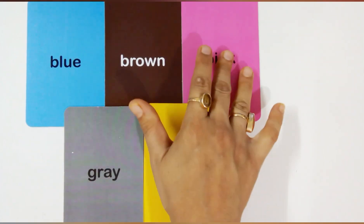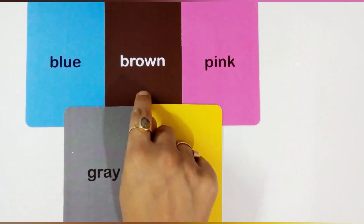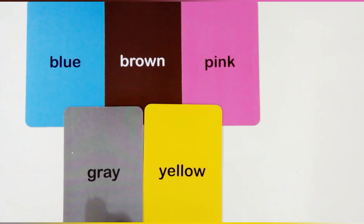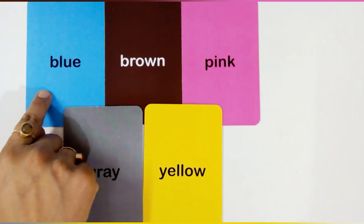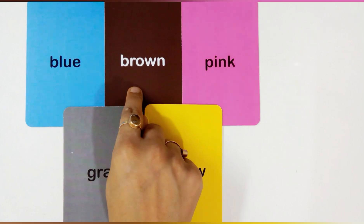Some color names are: blue color, brown color, pink color, gray color, yellow color. B for blue. B-L-U-E, blue. This is blue color.